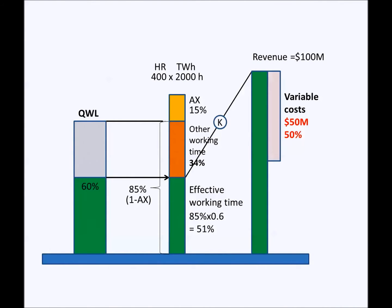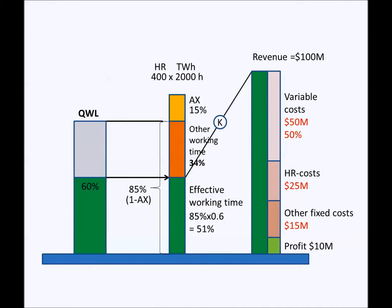According to the annual profit and loss account, there are variable costs of 50 million dollars, which is 50% from the revenue — variable costs of materials and purchased services which are needed in making the revenue. Staff costs are 25 million dollars, and other fixed costs like rents and licenses are 15 million dollars. Finally, when all costs are reduced, there will be an operating profit, in this case 10 million dollars.